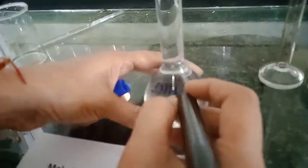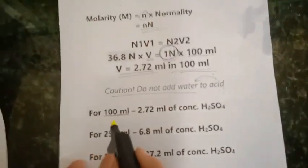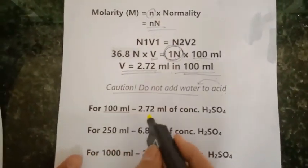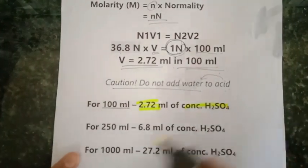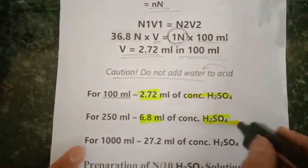If you want to prepare in 100 ml, use 2.7 ml; for 250 ml use 6.8 ml; and for 1000 ml use 27.2 ml of concentrated H2SO4.